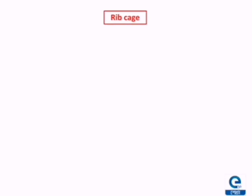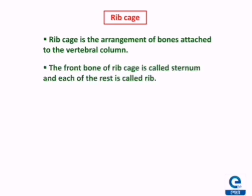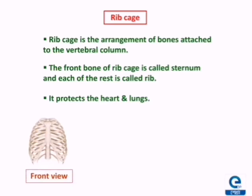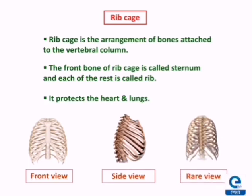Now we will learn about the rib cage. The rib cage is the arrangement of bones attached to the vertebral column. The rib cage envelops the bones of the thoracic cavity. There are about 25 bones in the rib cage. The front bone of the rib cage is called the sternum, and the rest are 12 pairs called ribs. They protect the heart and the lungs from any kind of mechanical injury. You can see the front view, the side view, and the rear view of the rib cage.